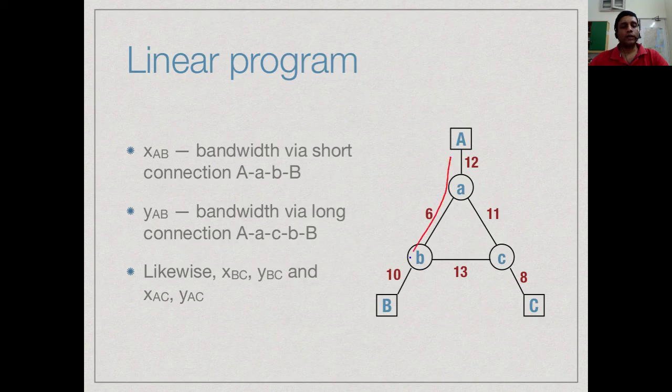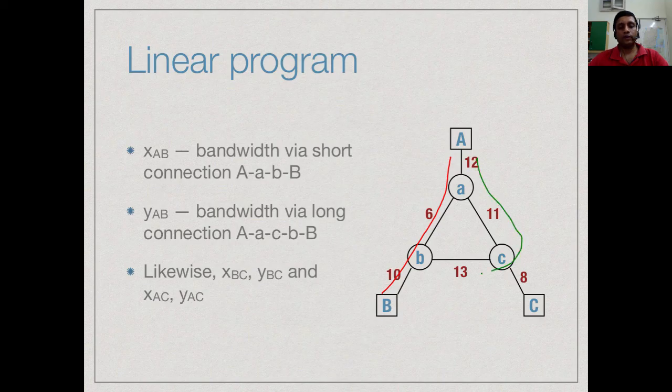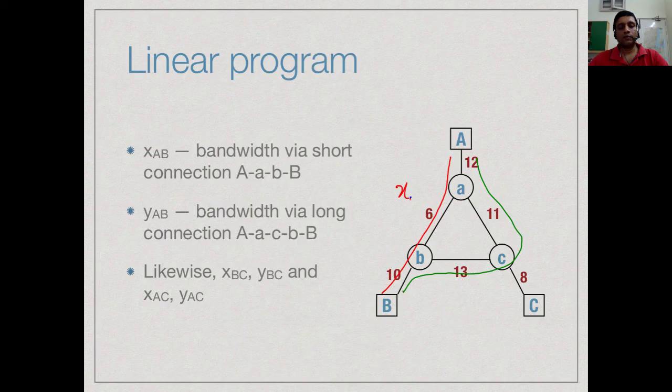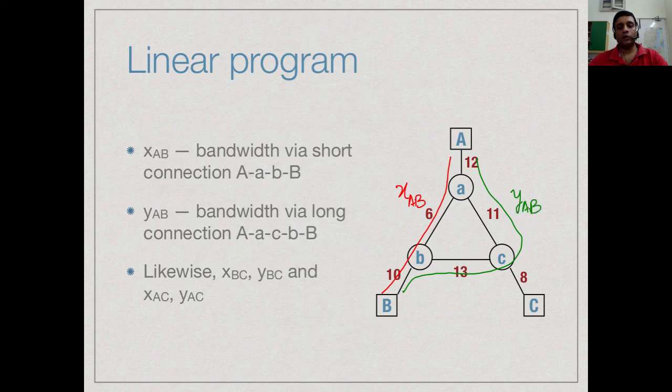We have A to B coming via the short route and we have A to B coming by the long route. What we will use is the variable x_AB to denote the quantity that is flowing on the red route and similarly y_AB to denote the quantity that is flowing on the green route.